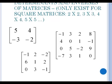The determinant of a matrix and the inverse of a matrix only exist for square matrices: 2 by 2, 3 by 3, 4 by 4, 5 by 5, etc. All of the matrices shown on this slide are square matrices because their rows and dimensions are the same.